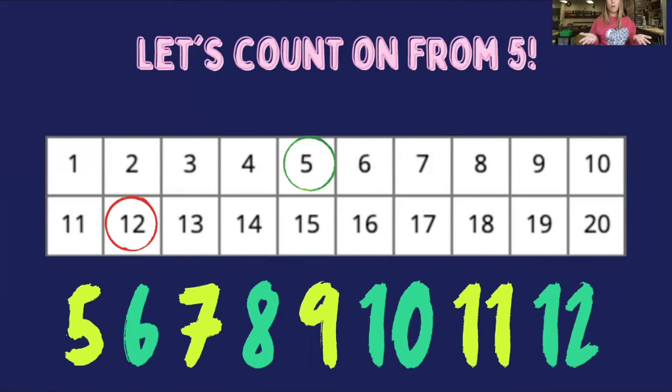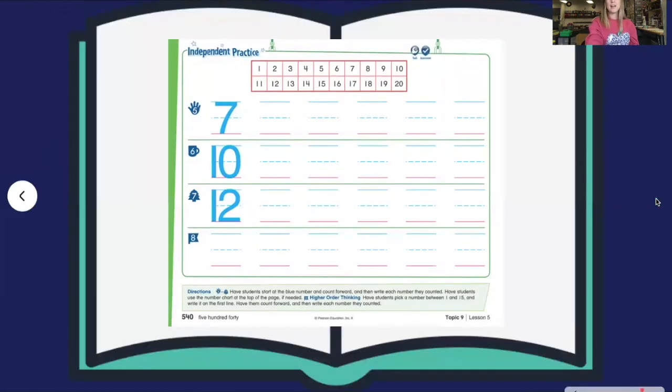Did we have to count all the numbers to 12? You're right. We did not have to count all 12 numbers. We started at 5. How did that help us? You got that right. It is quicker. Boy, do I like shortcuts. All right, boys and girls. Now it's your turn to get some practice with this.